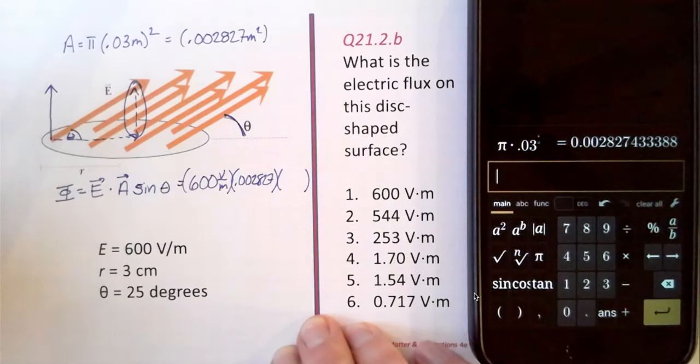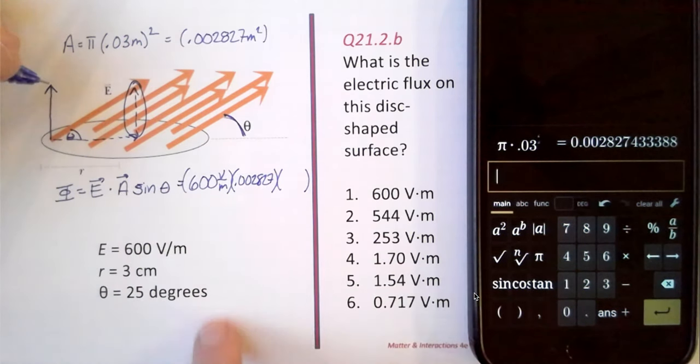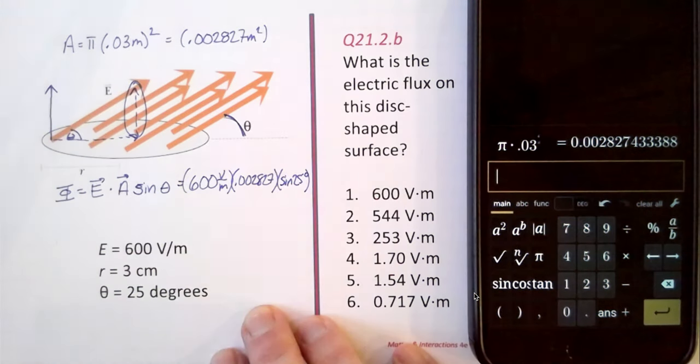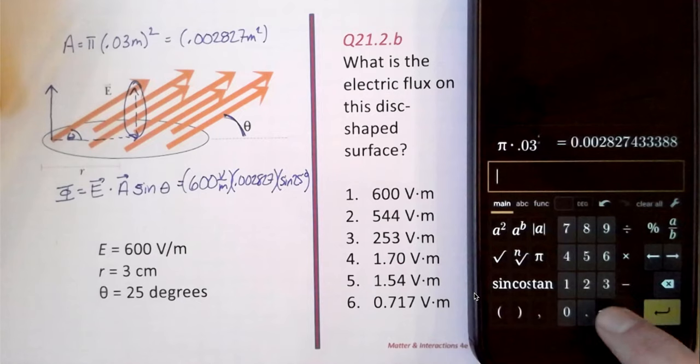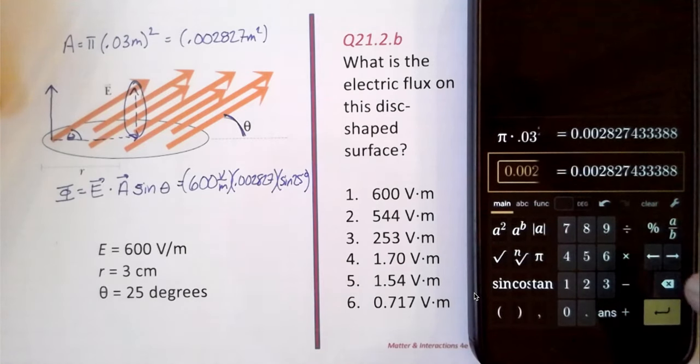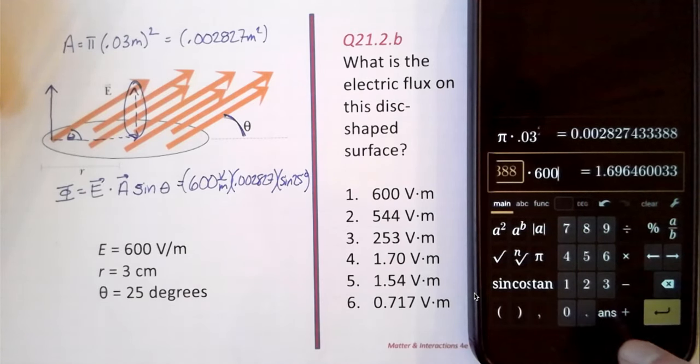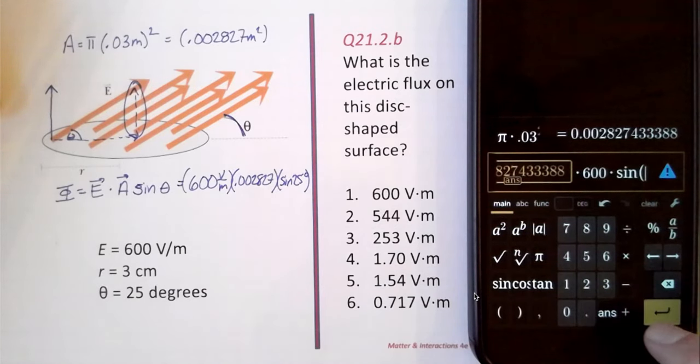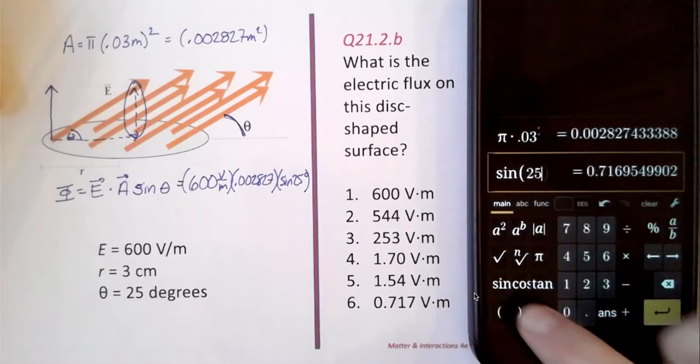And then we are going to multiply that by the sine of 25 degrees. So our area times 600 volts per meter times the sine of 25 degrees.